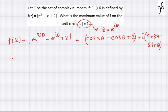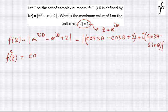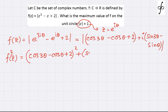Since we are calculating the magnitude of the complex number — the modulus of this whole complex number — we can use the modulus formula to get the value of f(z)². So f(z)² will come out to be (cos 3θ minus cos θ plus 2)² plus (sine 3θ minus sine θ)².